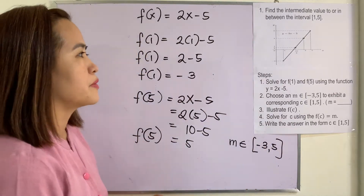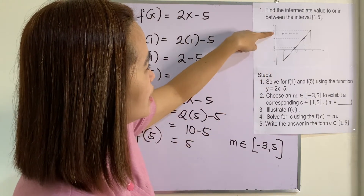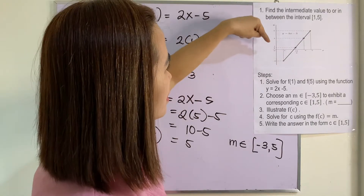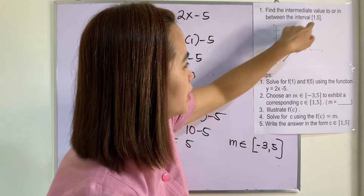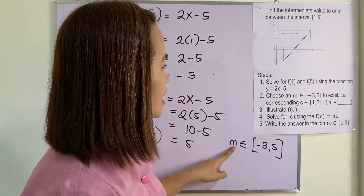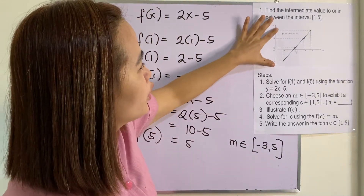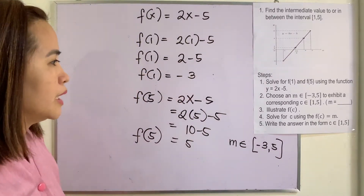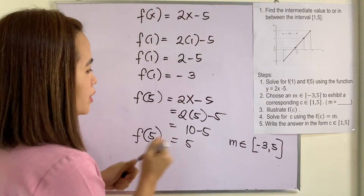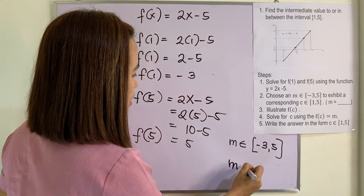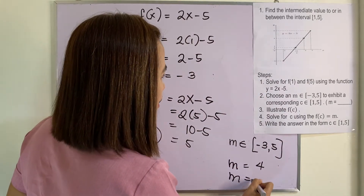Based on this graph, where is [-3, 5]? Negative 3 is here and this one is 5. Where is [1, 5]? This is 1 and this is 5. So meaning to say, if we have this interval, we are referring to x. Once we get this m, we are referring to 1. Now you have to take any number from negative 3 to 5. Let's say I will choose m to be 4 or m to be 1/2.